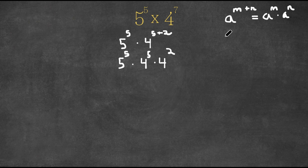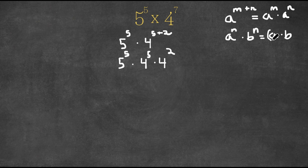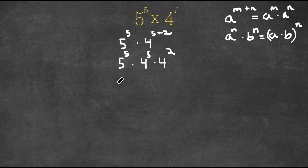Now another property of exponents is that if we have a to the power of n times b to the power of n, this is equal to a times b in parentheses to the power of n. So right here, we have 5 to the power of 5 times 4 to the power of 5, and 5 in this case is n, and 5 and 4 are a and b respectively. So this can be converted to 5 times 4 to the power of 5 times 4 squared.